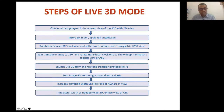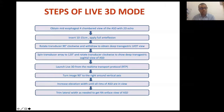To obtain a live 3D mode for ASD: first get a mid-esophageal four-chamber view of the ASD. Then push deeper by 10 to 15 cm, apply full anteflexion, and rotate the transducer about 90 degrees clockwise, then withdraw to get a deep transgastric LVOT view. Once you get that view, switch to 120 degrees to get a good sagittal view of the ASD. Steps three and four are the most critical. Then launch live 3D, turn 90 degrees around the vertical axis, and adjust elevation and lateral width to get an en-face view of the atrial septum, keeping the SPC at the 12 o'clock position.